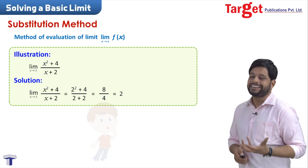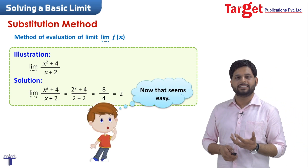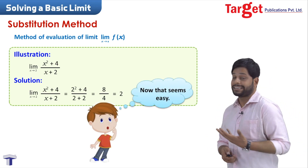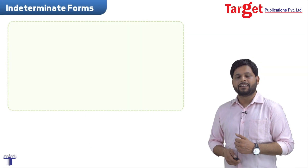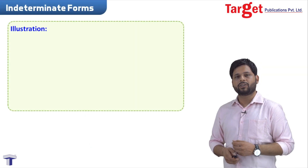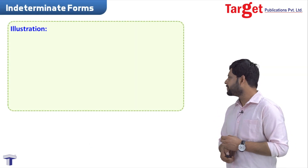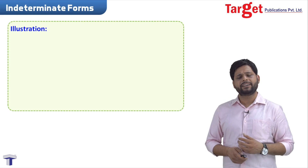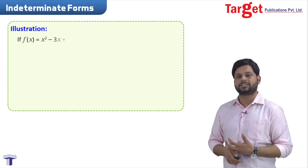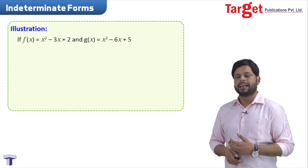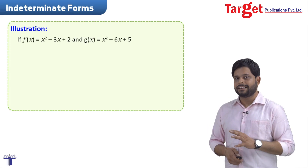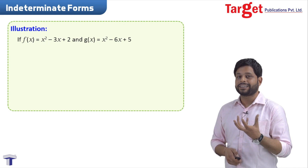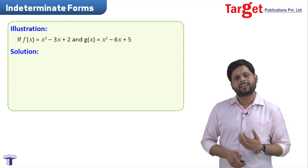Let us move on to the second type. These are obviously very easy ones. The second type is your indeterminate forms. I will take an illustration and then we will discuss what kind of forms these are.